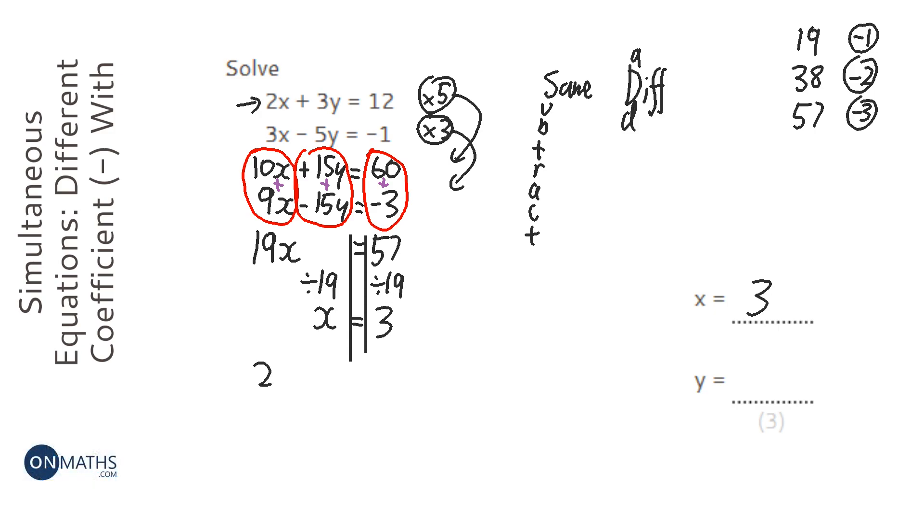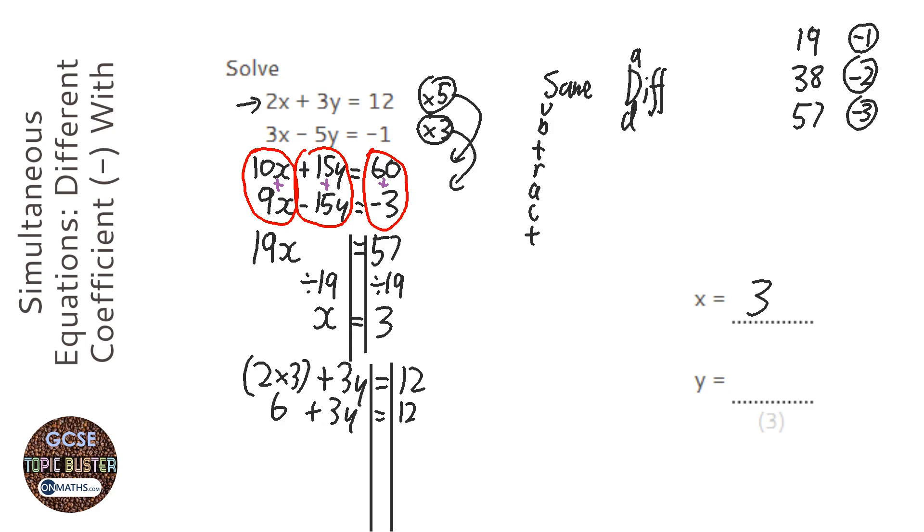So we've got 2 times 3 plus 3y equals 12. Let's put our lines going downwards. So 6 plus 3y equals 12.